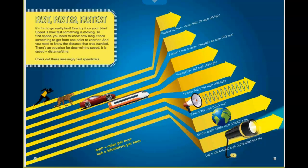Faster, faster, faster. It's fun to go really fast. Ever try it on your bike? Speed is how fast something is moving. To find speed, you need to know how long it took something to get from one point to another. And you need to know the distance that was traveled. There's an equation for determining speed. It is speed equals distance divided by time. Check out these amazing fast speedsters. The fastest human was able to run 28 miles an hour. Whereas the fastest land animal, the cheetah, can go 64 miles an hour.